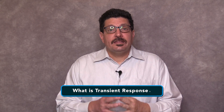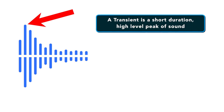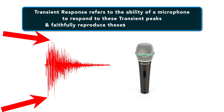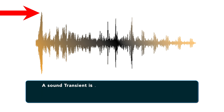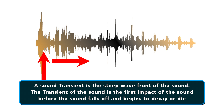So, what is transient response? In the audio world, a transient is a short duration, high level peak of sound such as a hand clap or a snare drum hit. Transient response refers to the ability of a microphone to respond to these transient peaks and faithfully reproduce the sudden waveforms that these sounds create. A sound transient is the steep wave front of the sound — in other words, the first impact of the sound before the sound falls off and begins to decay or die.